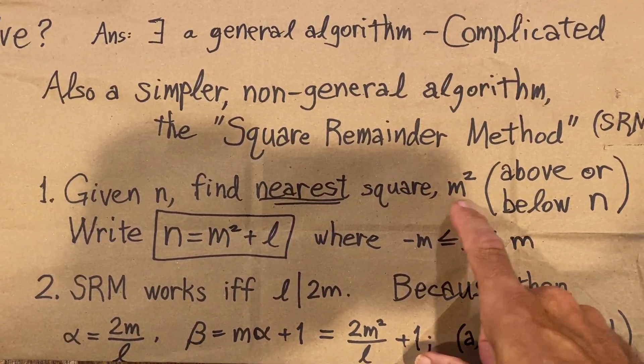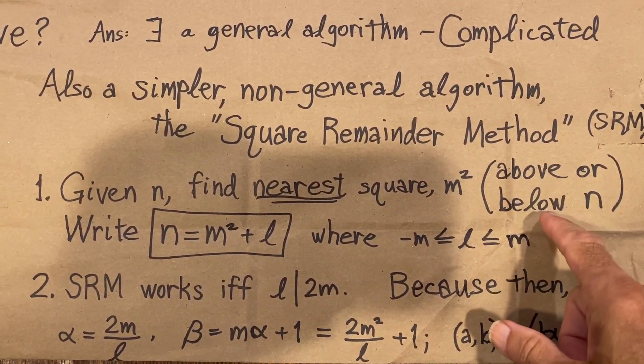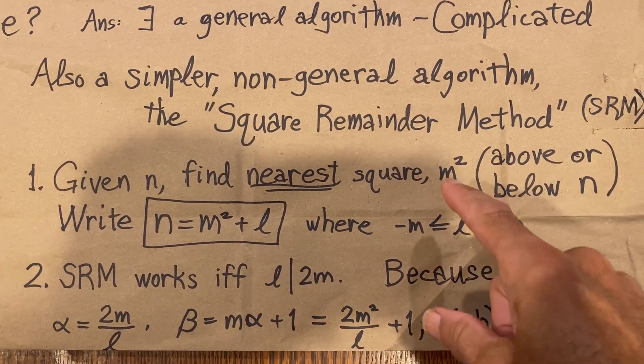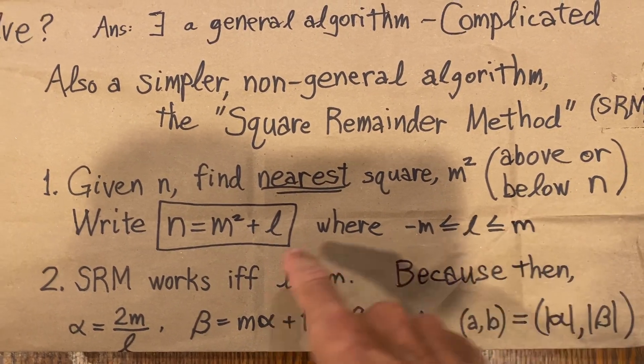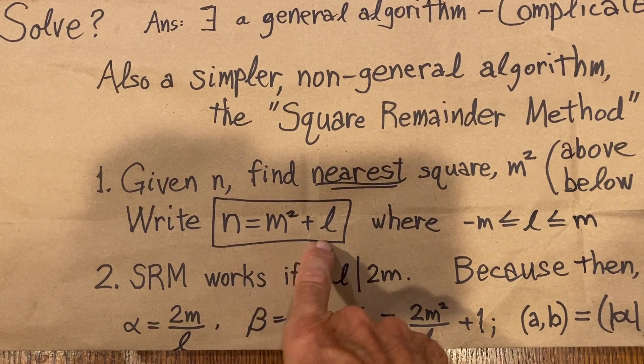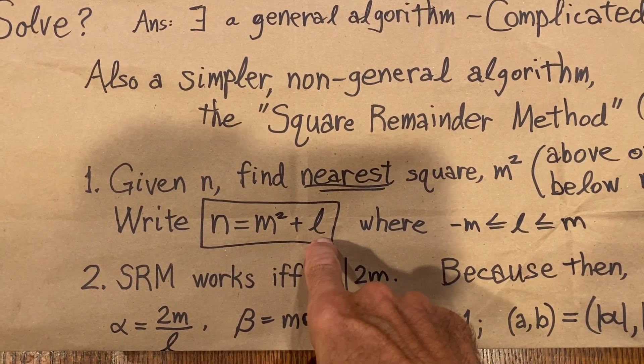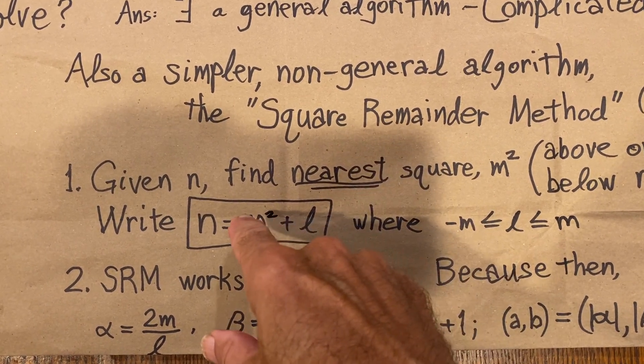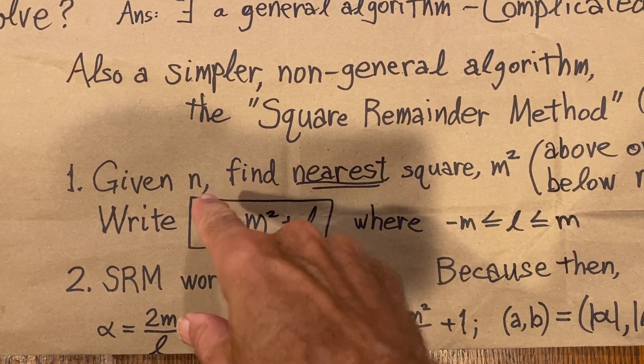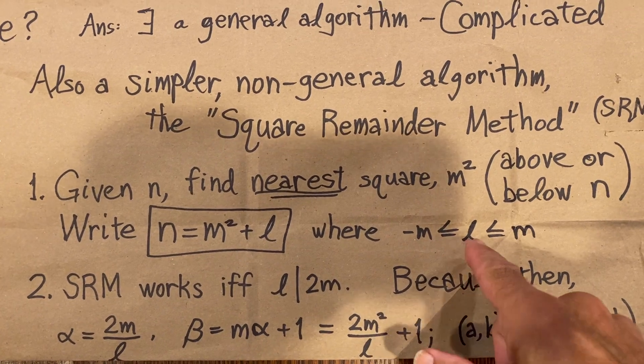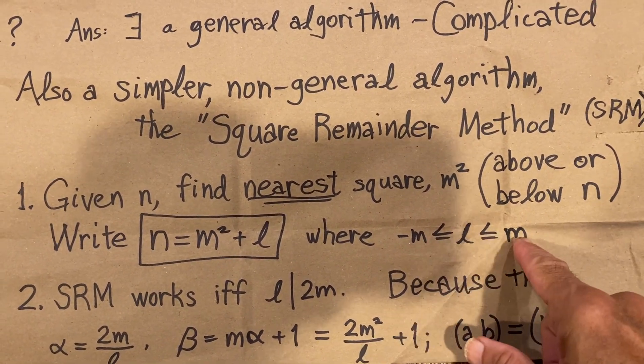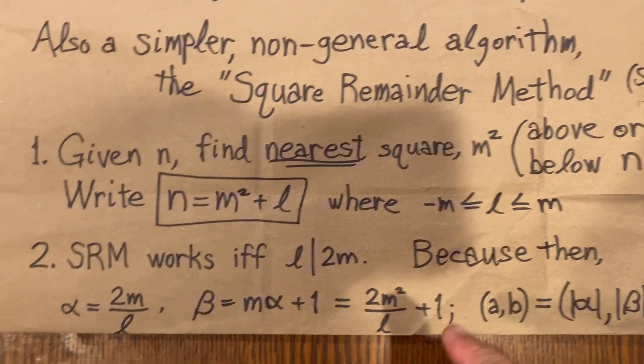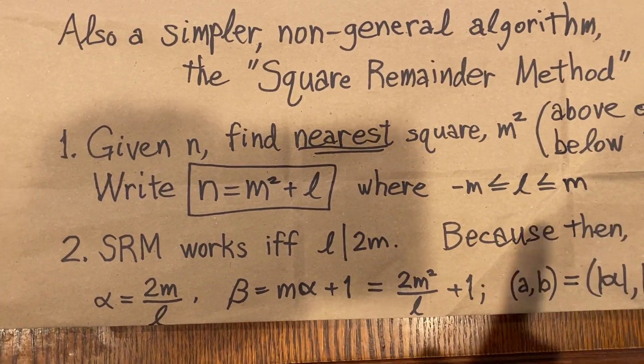And it doesn't matter if it's above or below n, just that it's the nearest square to n. Then write n as m squared plus l, where l is the square remainder, thus the name of the method, and l can be positive or negative, because m squared can be above or below n. But l will be between minus m and plus m. And again, it can be of either sign, it can't be zero.